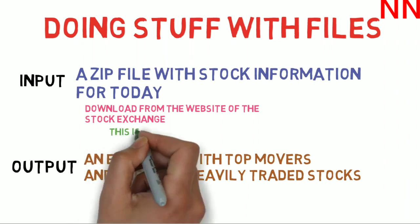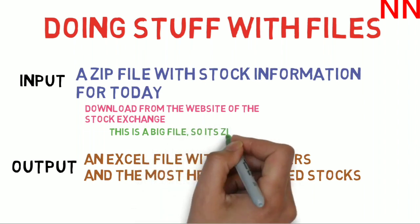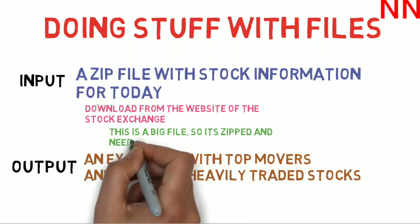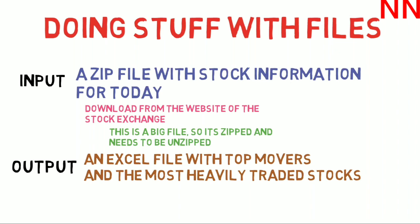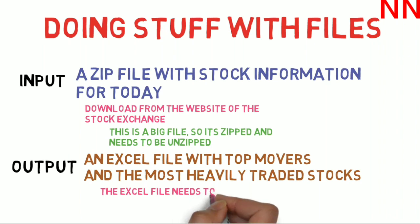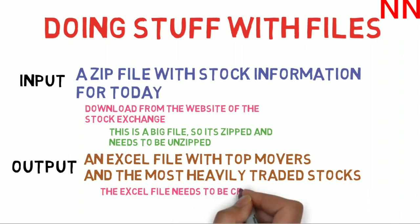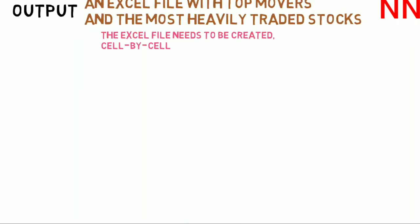The input file is zipped because it's a pretty big file — it has all the information about all the stocks for one day, so it needs to be unzipped. The Excel file needs to be created cell by cell; you need to specify what data should be present in each cell of the Excel file's worksheet.